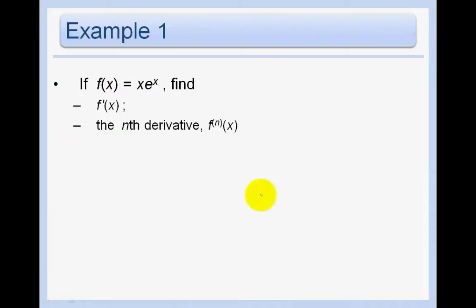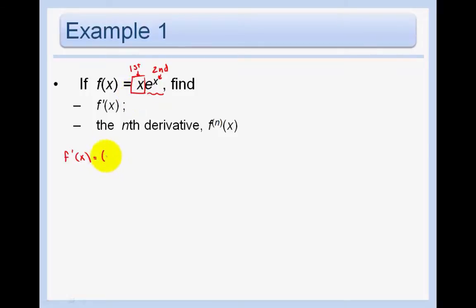So let's do an example and try to find the derivative of x times e to the x. You can see that x times e to the x is the product of two functions, so we must apply the product rule. We take the derivative of the first — x is our first, e to the x is our second — so the derivative of x is just 1 times the second, plus the first times the derivative of the second. And the derivative of e to the x is just e to the x. So that is going to be e to the x plus x e to the x.